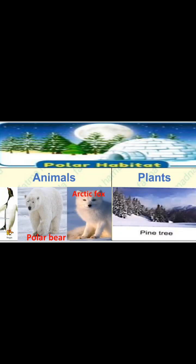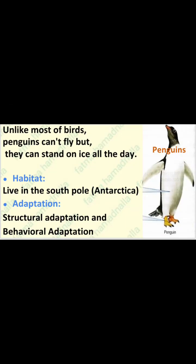Let's start with the polar habitat. There are many animals and plants living in the polar regions, such as penguins, the Arctic fox, the polar bear, and the pine tree. Let's start with the first animal, which is the penguin. Unlike most birds, penguins can't fly, but they can stand on ice all day. Penguins live in the South Pole, called Antarctica. Now let's talk about adaptation in penguins. There are two types of adaptation: structural adaptation and behavioral adaptation. We will focus on the structural adaptation of penguins.